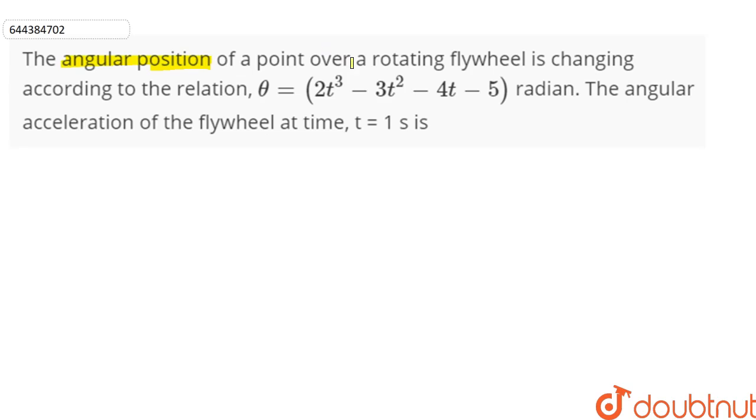The angular position of a point over a rotating flywheel is changing according to the relation theta equals 2t cube minus 3t square minus 4t minus 5 radians.